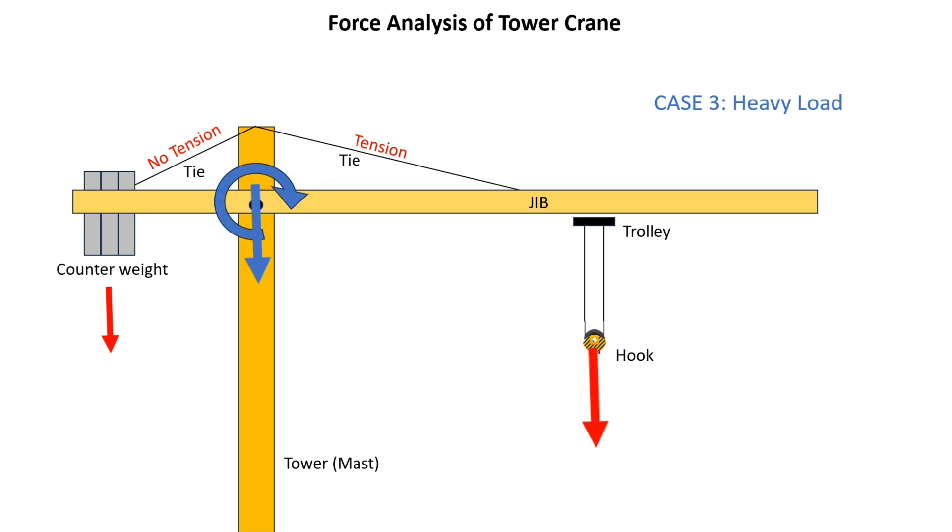This bending moment produces tensile stress on the left extreme fiber and compressive stress on the right extreme fiber. The vertical downward force equals the sum of counterweight plus the load on hook, which causes direct compressive stress on the tower.